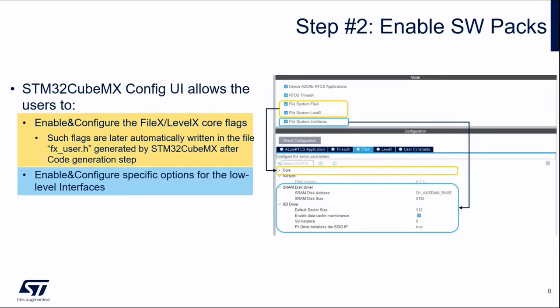If you want, you can also bypass the QMX to enable or disable features. In this case, you can directly browse the fx_user.h file or the lx_user.h file. You will get the same result, obviously, but you will lose the user-friendliness of the QMX. So, if you can, always try to use the QMX, because the user interface makes it much simpler compared to working at the low level and manually enabling or disabling macros.